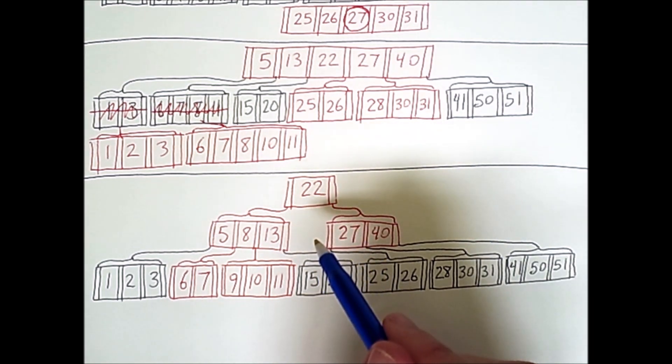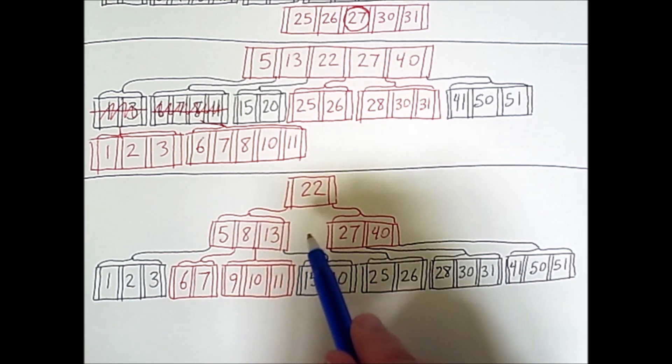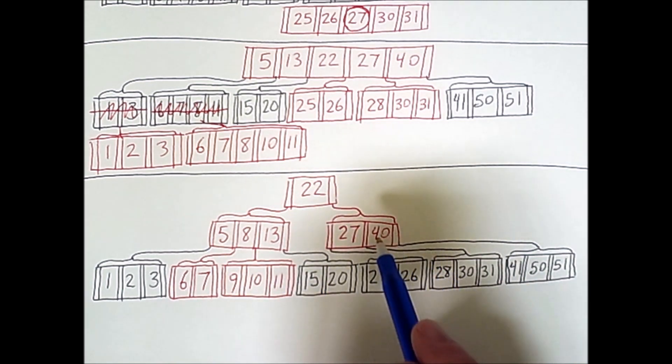Because every once in a while, the node that is the current root will become full, and the way we resolve that is we promote its median, thus splitting what was the root node into two new nodes of half the size that we need.